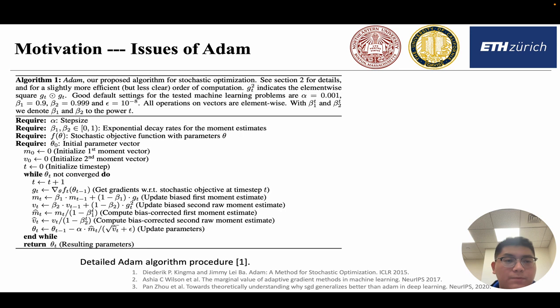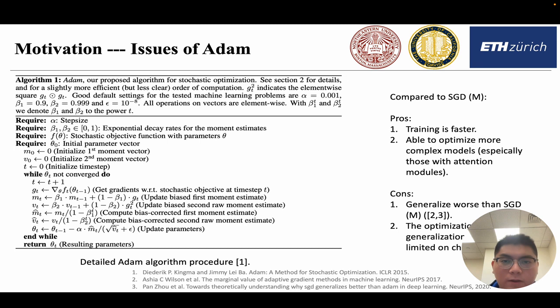The motivation of this paper mainly comes from the desire to solve the issues of Adam. As we all know, Adam is one of the default optimizers in deep learning. Recently, for the very hot large language models, they are usually optimized using Adam or its variant AdamW. Compared to stochastic gradient descent with momentum, the pros of Adam are mainly two aspects. First, it enables faster training. In other words, it takes shorter time for Adam to achieve the same training loss than SGDM.